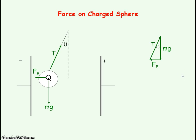We can then use trigonometry and we can say that tan θ is equal to the opposite divided by the adjacent. The opposite is the electric force and the adjacent is the weight.